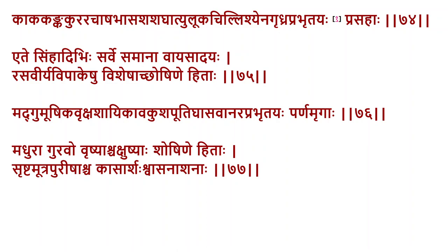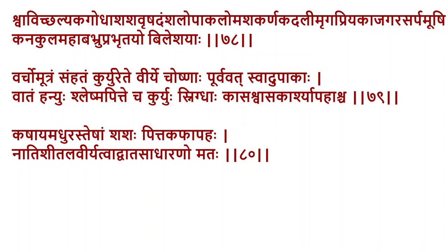Next are herbivorous animals: mudga, mushika, vruksha-shayi, kava, kushaputi, puti-ghasa, vanarap (monkey), and rats. The flesh of these animals is madhura (sweet), guru in quality, and vrushya. They are used in diseases like shocha and kasa.